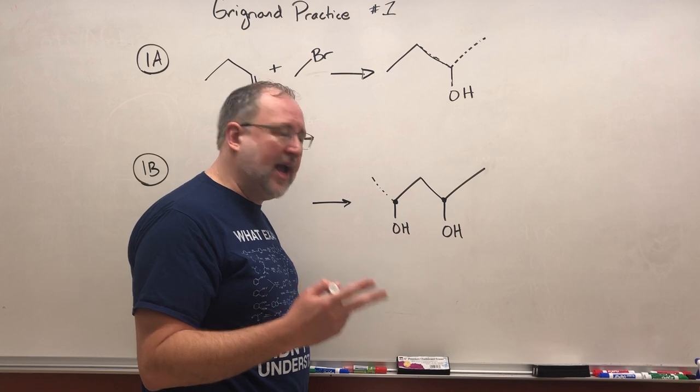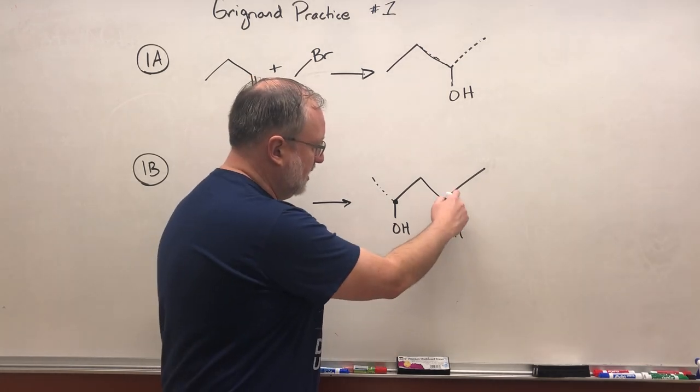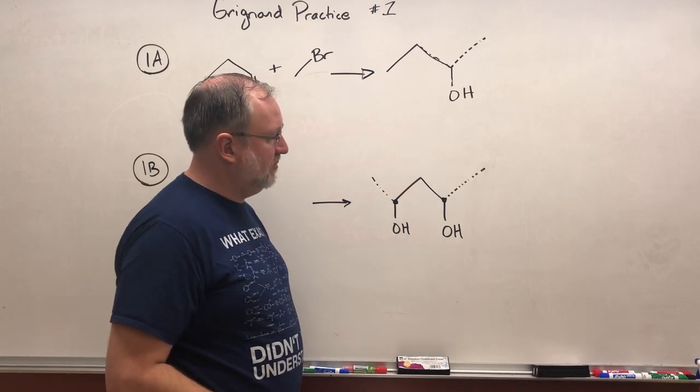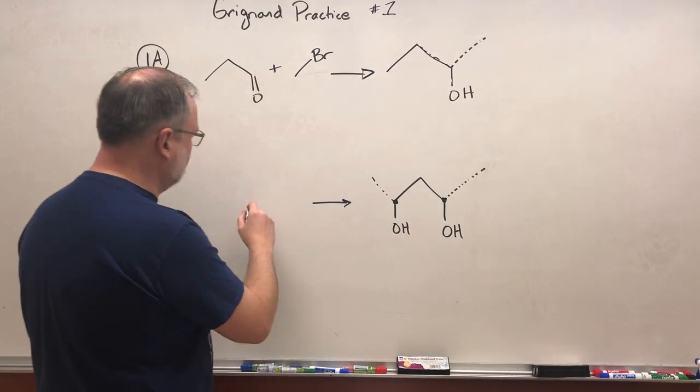And if we only want two reactants we want it to be kind of symmetrical. So we could also say this was a bond that got formed. Right which means we would be starting with something like this.